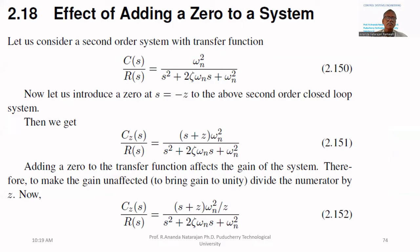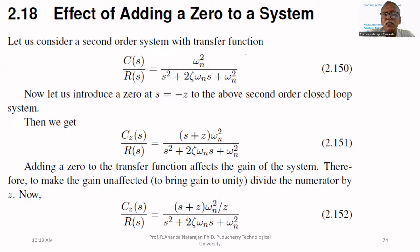Suppose I have a second order system. If I add a pole to the system, it means we are modifying the system and it becomes third order — its characteristics will be modified. Similarly, the system shown here doesn't have any zero. If I add a zero to this system, we can again modify its characteristics, and that is what we are going to see today.